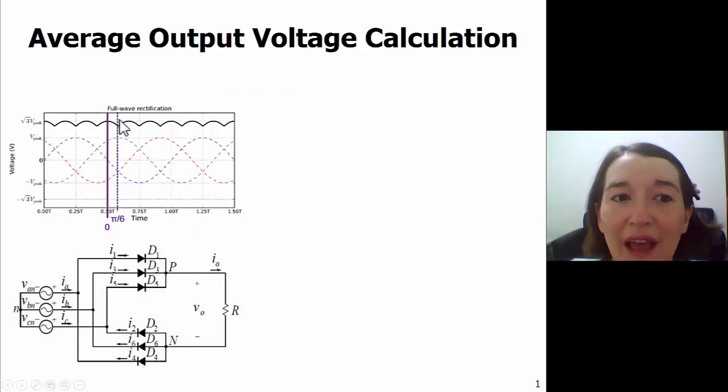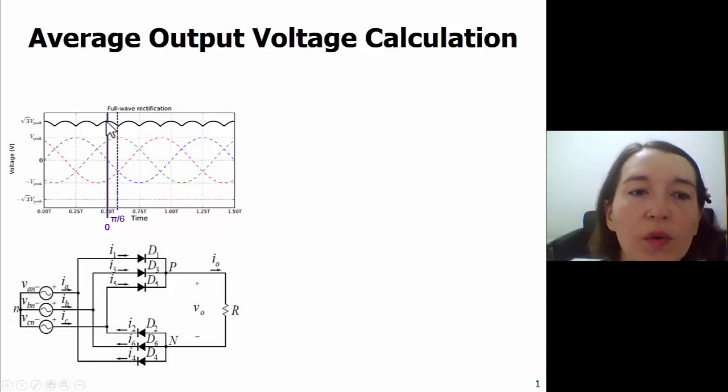So we want to find the average voltage here, and because it's repeating we can divide it, pick our own zero, and then just integrate over the portion that is repeating. So if we set this line as zero, we only have to integrate from here to here, which is actually one-twelfth of the period. So 2π divided by 12 is π over 6. So we can just integrate over this tiny interval.